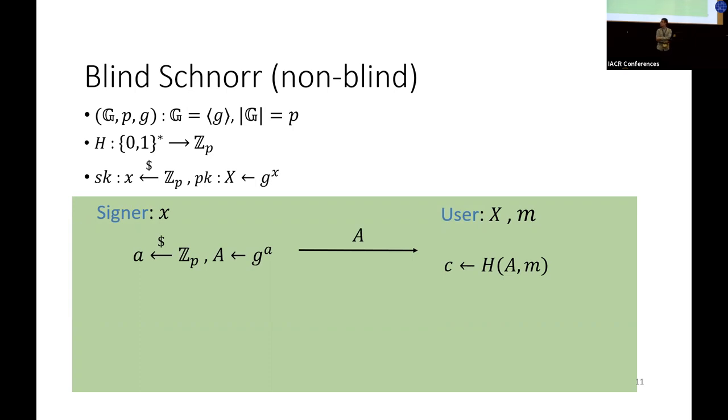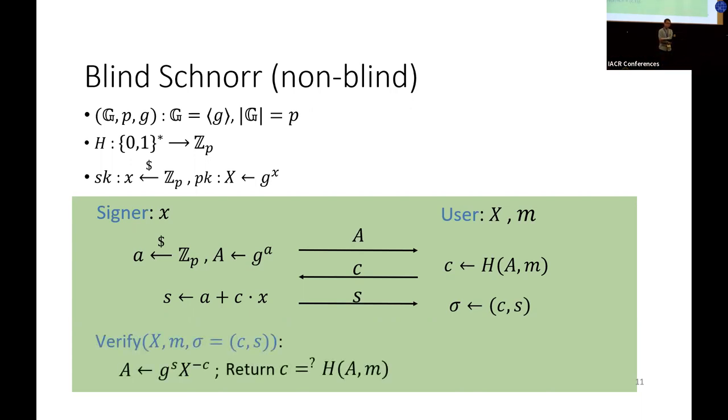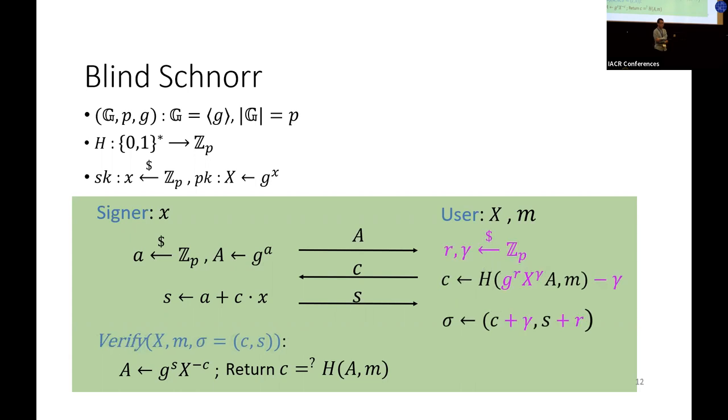Then the user computes the challenge c as the hash of A and m. After receiving the challenge from the user, the signer computes s as a plus c times x. Then the final signature is just c and s. To verify a signature, one can recover the A from c and s, and then check whether c is consistent with the hash value.